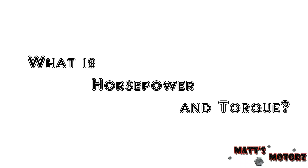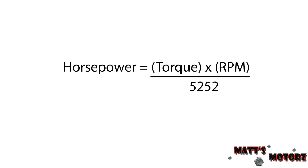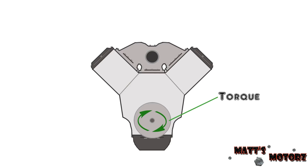In this video, I'm going to explain what horsepower and torque are. Let's start with the equation: horsepower equals torque times RPM divided by 5252.